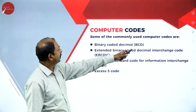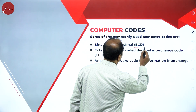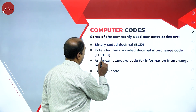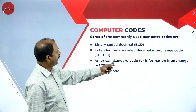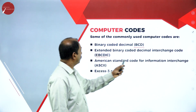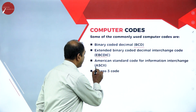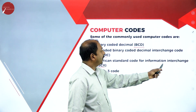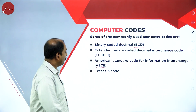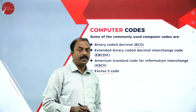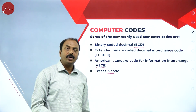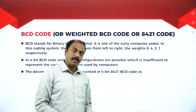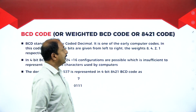Computer codes represent various characters, numbers, and control keys that the user selects on the keyboard. Some commonly used computer codes are: BCD — Binary Coded Decimal; EBCDIC — Extended Binary Coded Decimal Interchange Code; ASCII — American Standard Code for Information Interchange; and XS3 code. Now let us see the definition of each of these one by one.